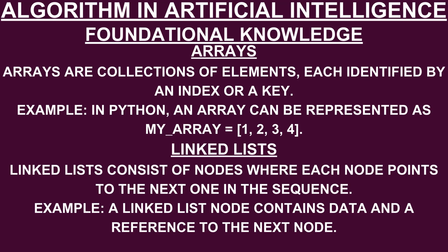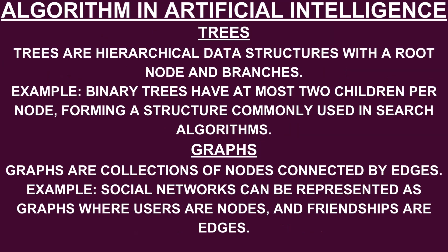Linked lists consist of nodes where each node points to the next one in the sequence. A linked list node contains data and a reference to the next node. Trees are hierarchical data structures with a root node and branches. Binary trees have at most two children per node, forming a structure commonly used in search algorithms. Graphs are collections of nodes connected by edges. For example, social networks can be represented as graphs where users are nodes and friendships are edges.